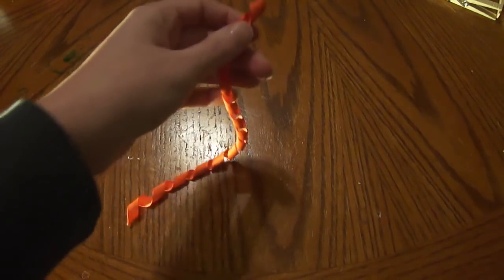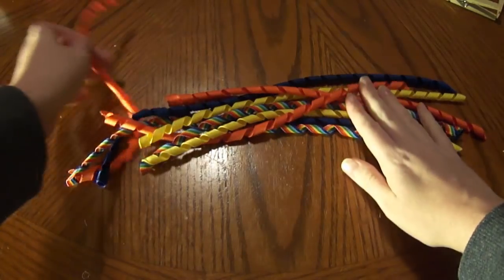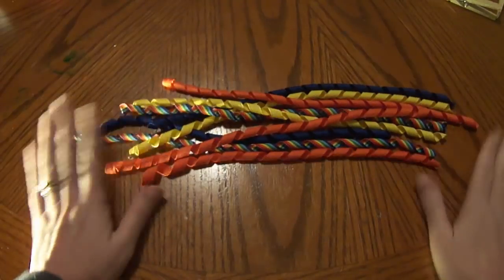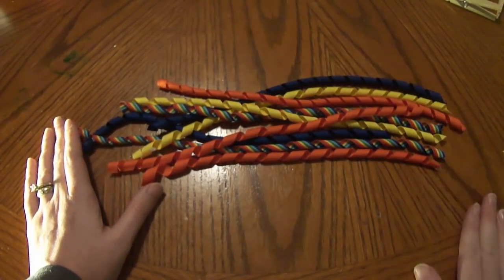And this is what your corker ribbon will look like. Now we're going to cut it into smaller pieces and form our hair bow.